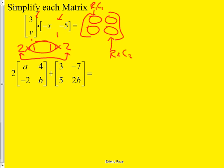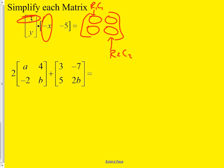Each spot has a row-column address. Row one is across here and there's only one entry in that row, and this is the column, so that's row one times column one. What goes there is negative 3x. Please finish the other three spots, and if you're done early, try the second problem.